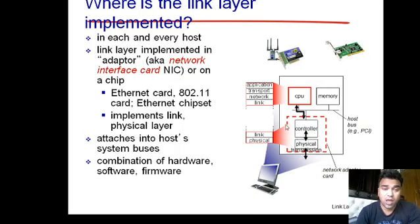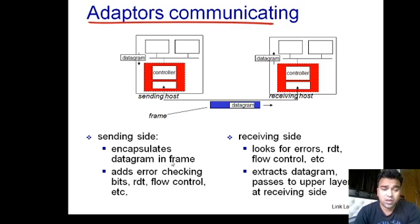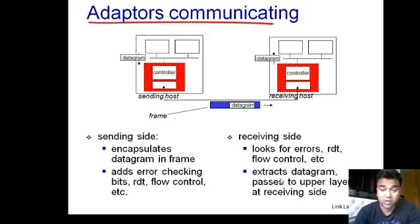This adapter communication slide shows the sending and receiving sides. At the sending side, the datagram is encapsulated into a frame — header and trailer are added, error-checking bits are placed in the trailer, and data is transferred using a reliable data transfer protocol with flow control. At the receiving side, the frame is checked for errors, flow control is applied, and the datagram is extracted and passed up to the Network Layer.